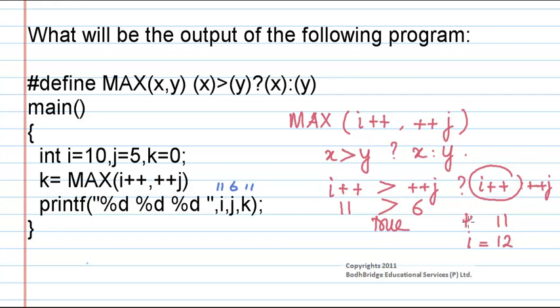So that is why when we print, the value of k is 11, i is 12, and j remains as 6. So this is the actual output. This is how we are getting the output like this. So our answer here is wrong. k is equal to 11, i is equal to 12, and j is equal to 6.